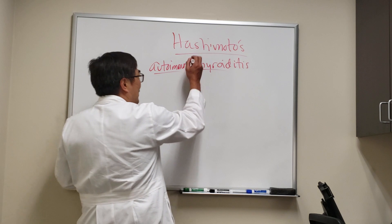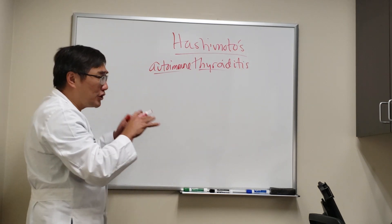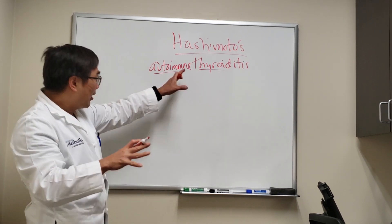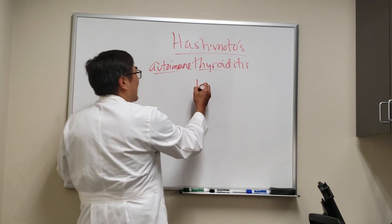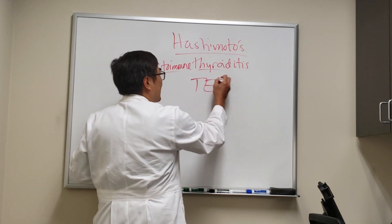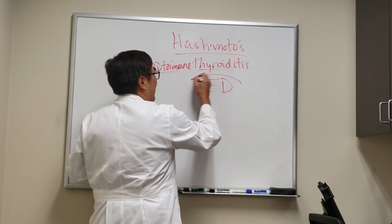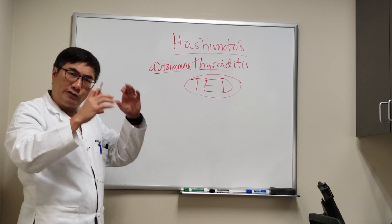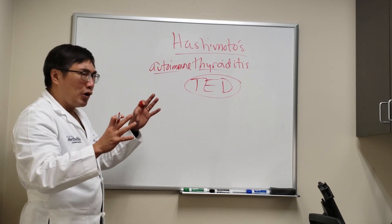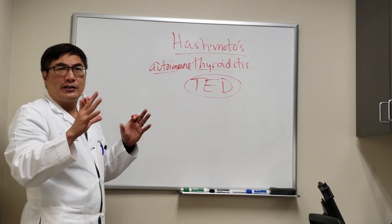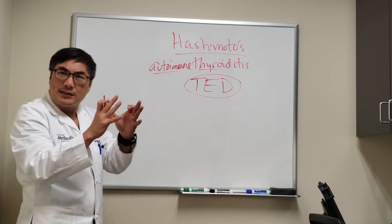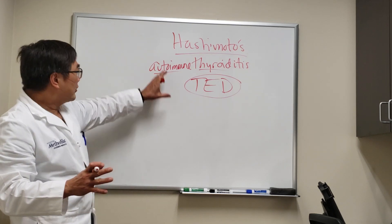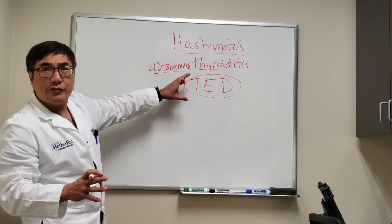In Hashimoto's autoimmune thyroiditis, just like in Graves' autoimmune thyroiditis, we can get thyroid eye disease. That thyroid eye disease usually results in proptosis and lid retraction, lid lag, diplopia, and rarely it can cause compressive optic neuropathy at the orbital apex and loss of vision. Those are the well-known things.